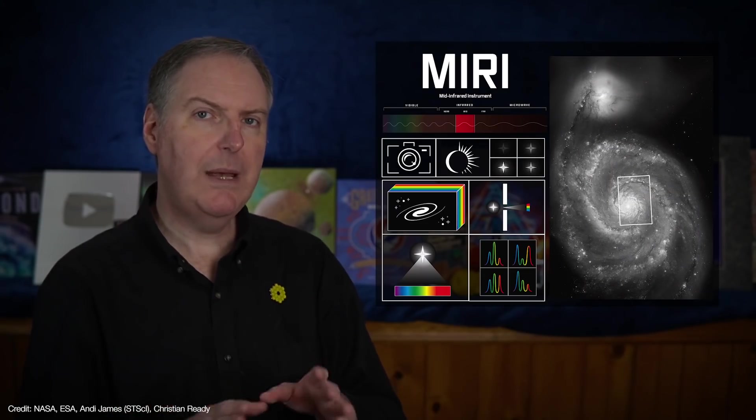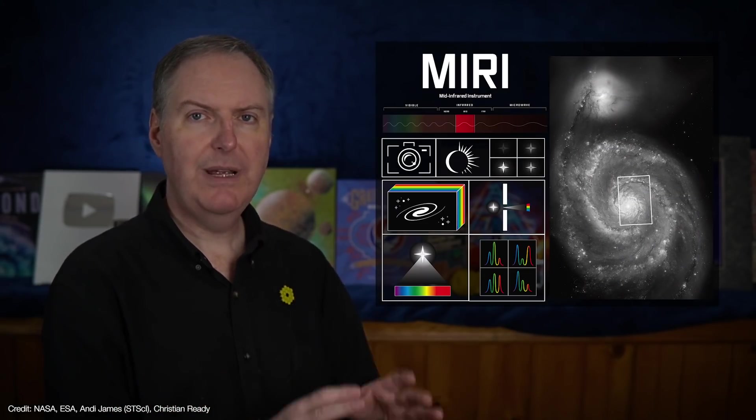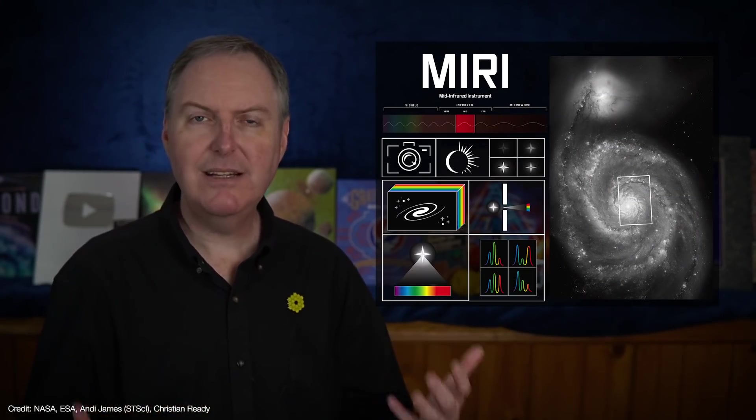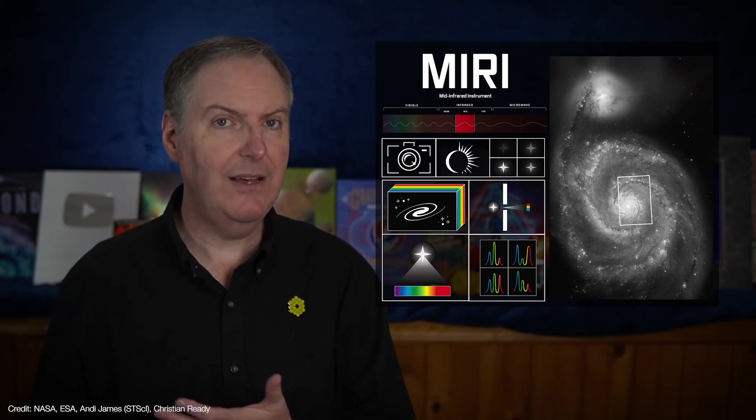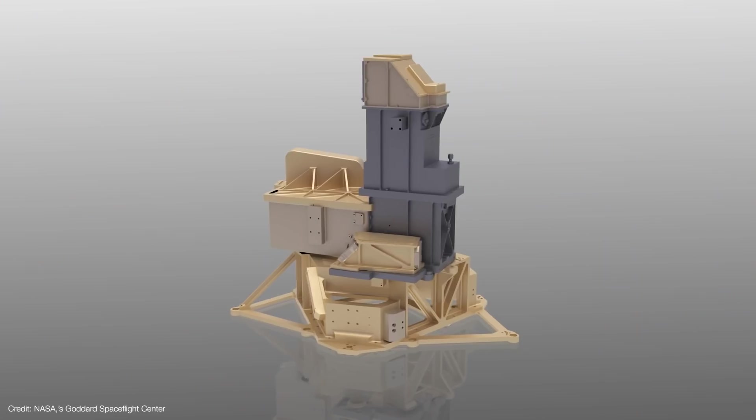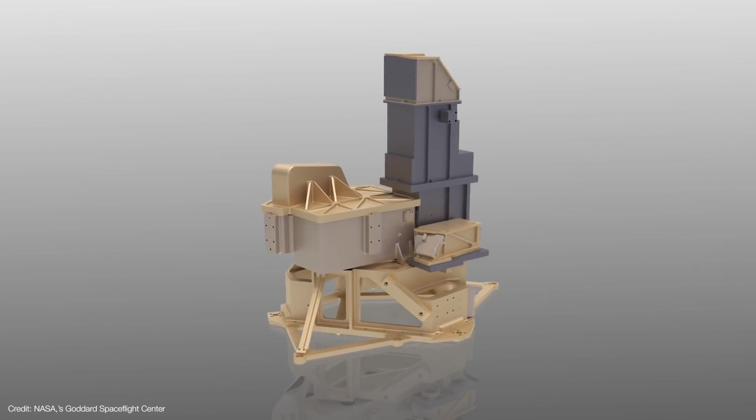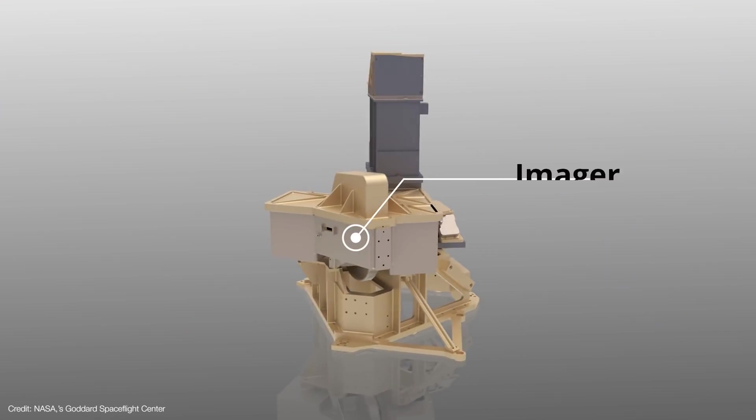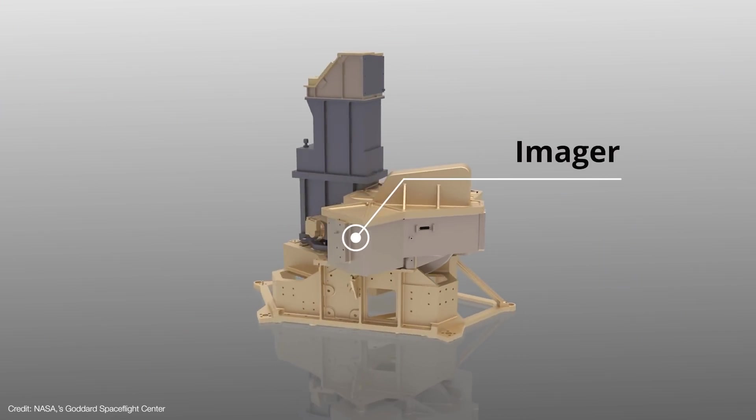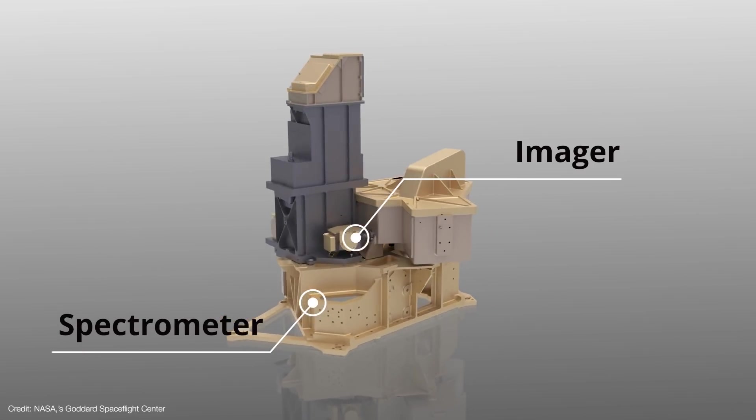Because MIRI is Webb's only mid-infrared instrument, it basically does a little bit of everything else that the other instruments can do. To that end, MIRI is physically set up so that one half of the instrument handles the imaging and the other half handles the spectroscopy.